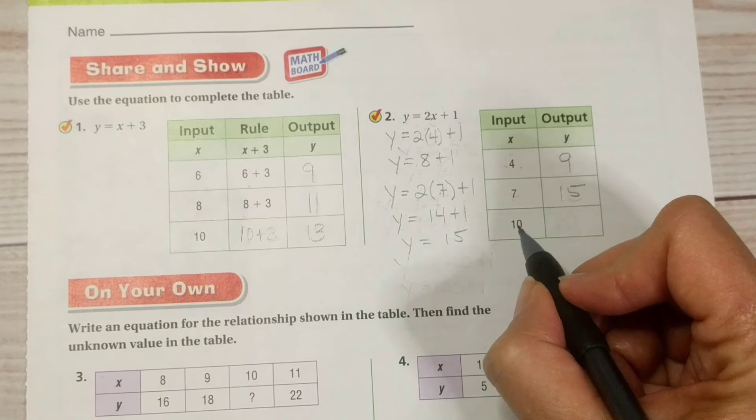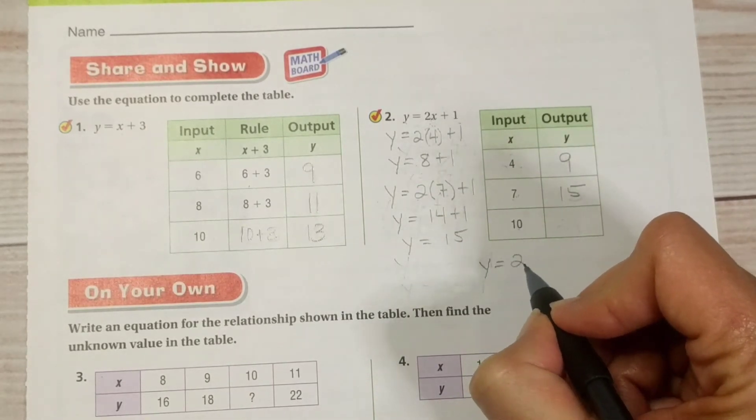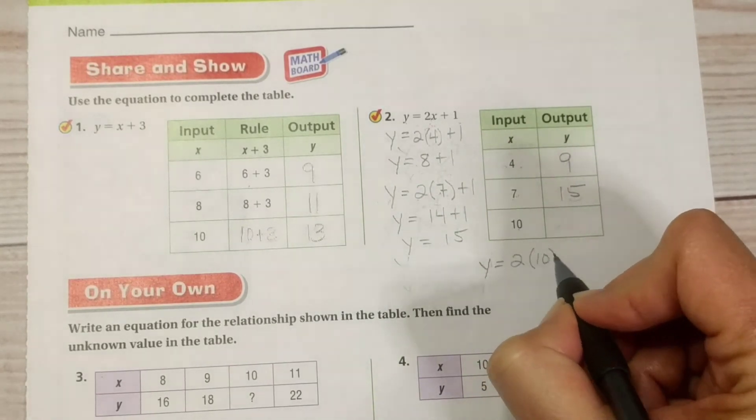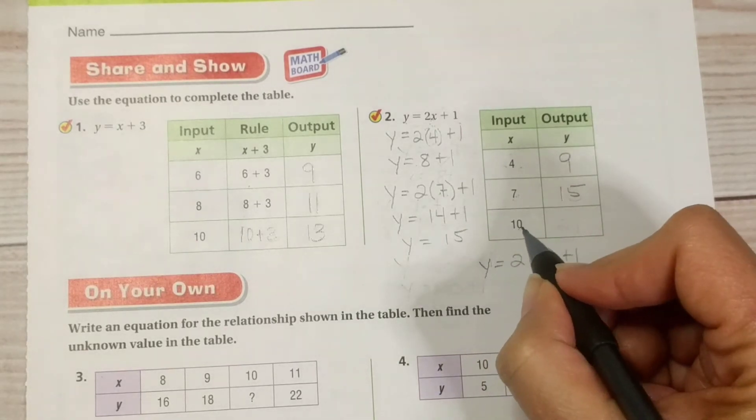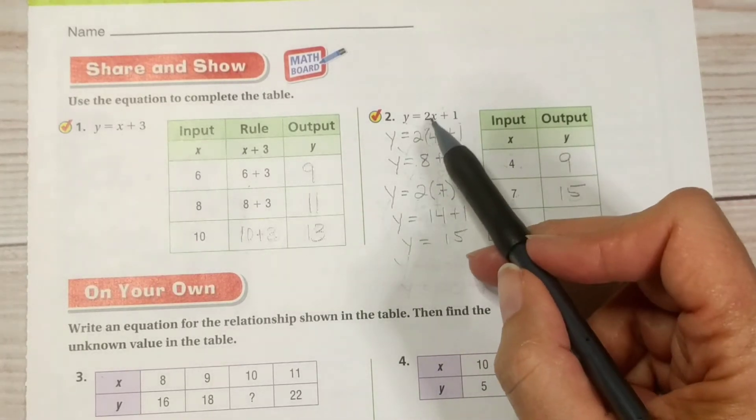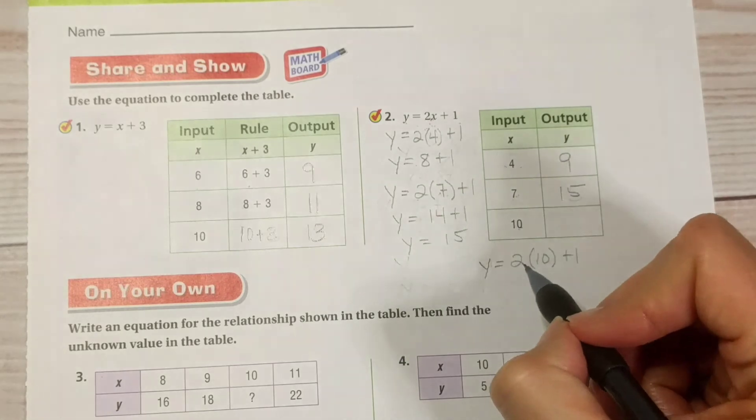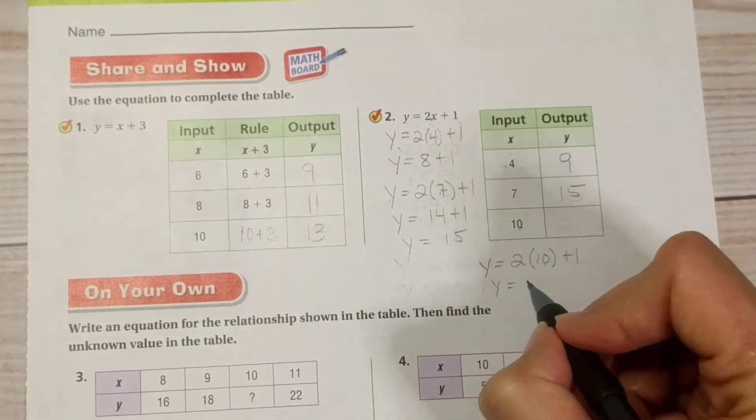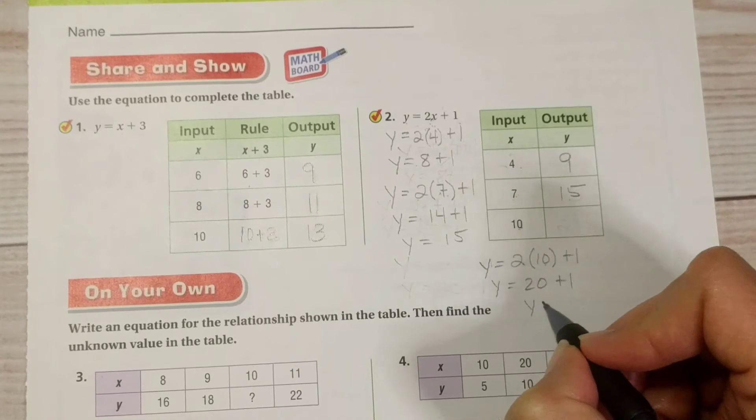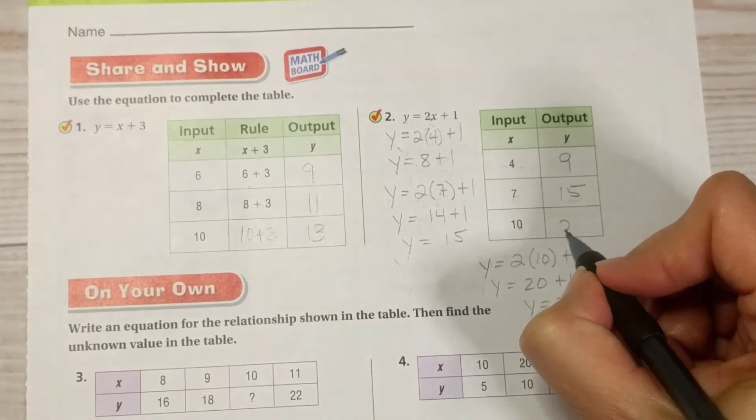All right, down here we have Y equals 2 times 10 plus 1, because we're substituting the 10 in for our X value. 2 times 10 is 20 plus 1. Y equals 21.